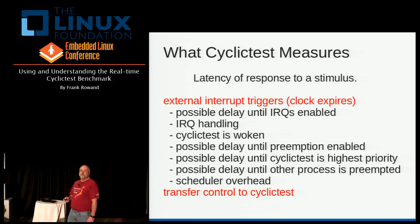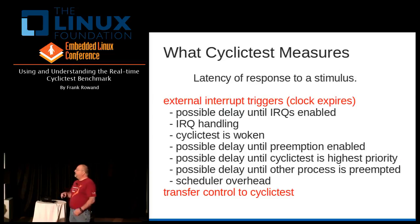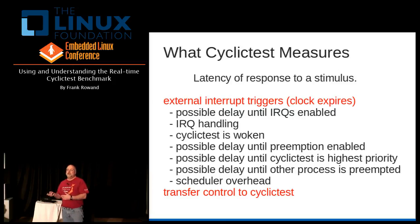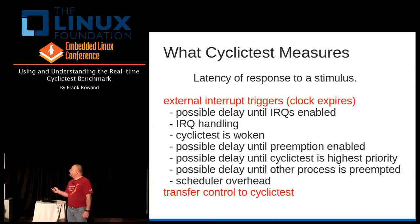IRQs might be disabled when the interrupt comes in, so you might not be able to handle it right away. It takes a little bit of time to run through the IRQ handling code, saving state and figuring out which interrupts are pending. We actually wake up the cyclic test program because it's registered for this interrupt, but it hasn't started running yet. There might be a delay because preemption might be disabled. Cyclic test might not be the highest priority program — there might be some other higher priority program that's awake and ready to run. We may have to wait for that process, and to start running us we have to invoke scheduler code. It's amazing how much code is involved in this entire path.